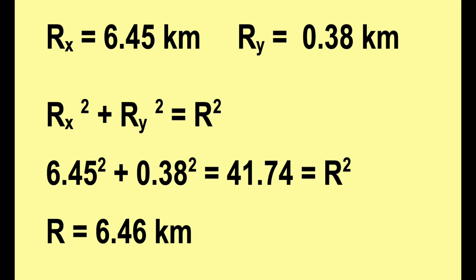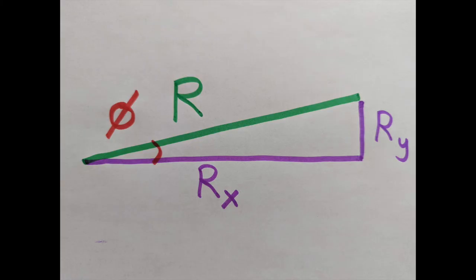Notice that that's barely more than RX, which is true because we're almost going entirely in the x direction. There's only a little bit in the y direction, so that will sometimes happen. Also, note that the answer is not 41.74. I mean, obviously you don't walk 41 kilometers to go to that spot, but it's important to remember to take the square root. That's a very common mistake, so watch out for that.